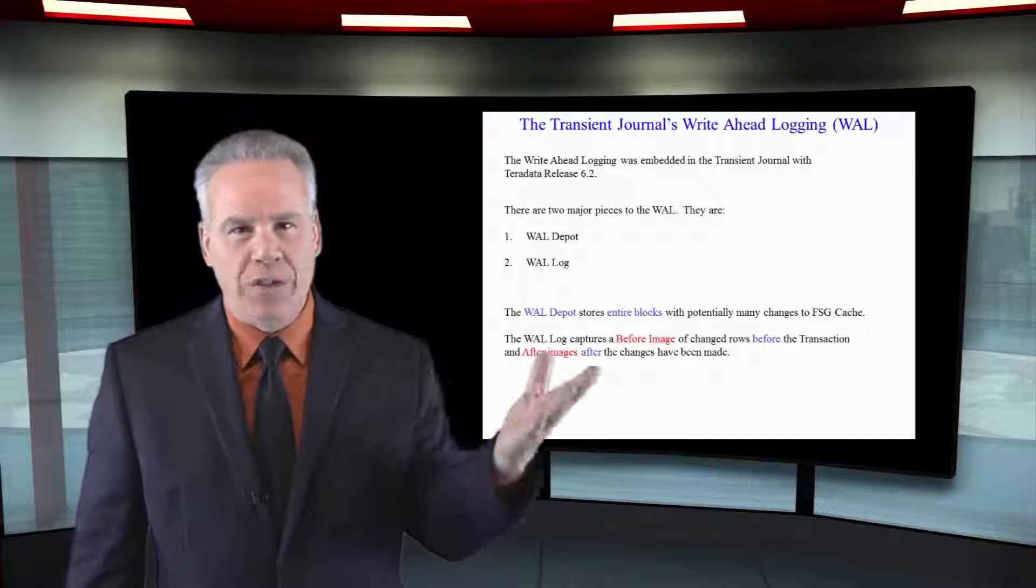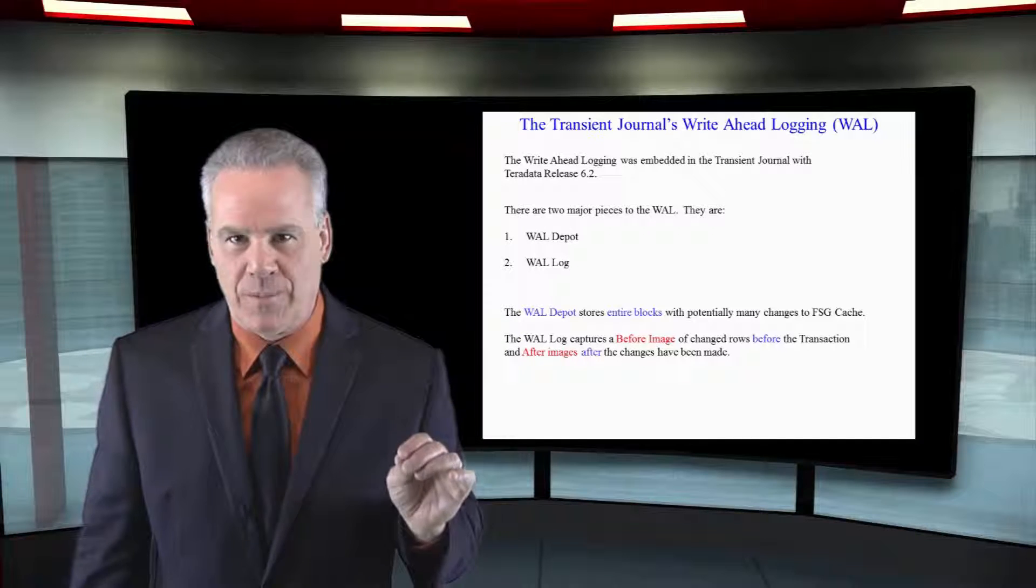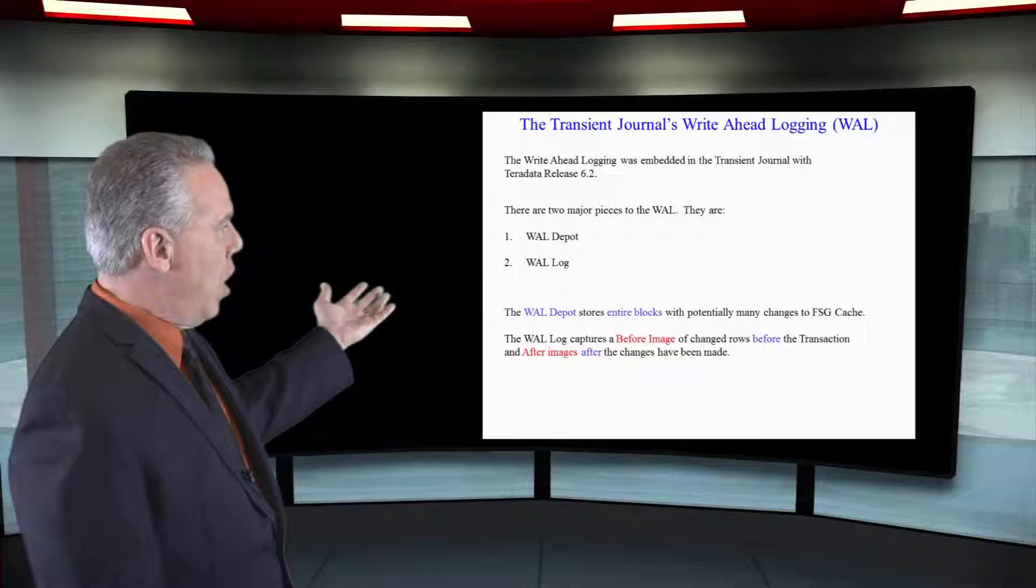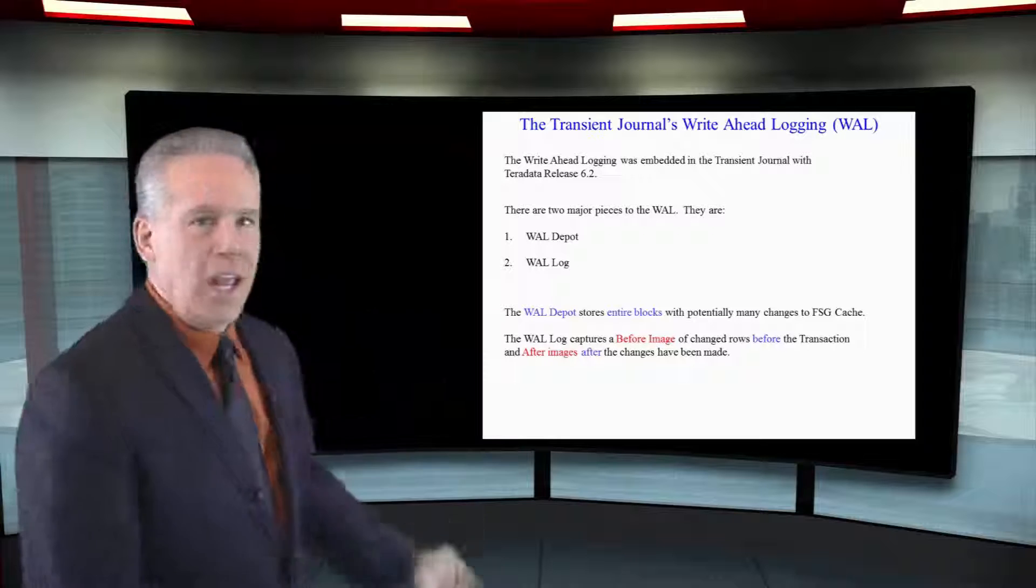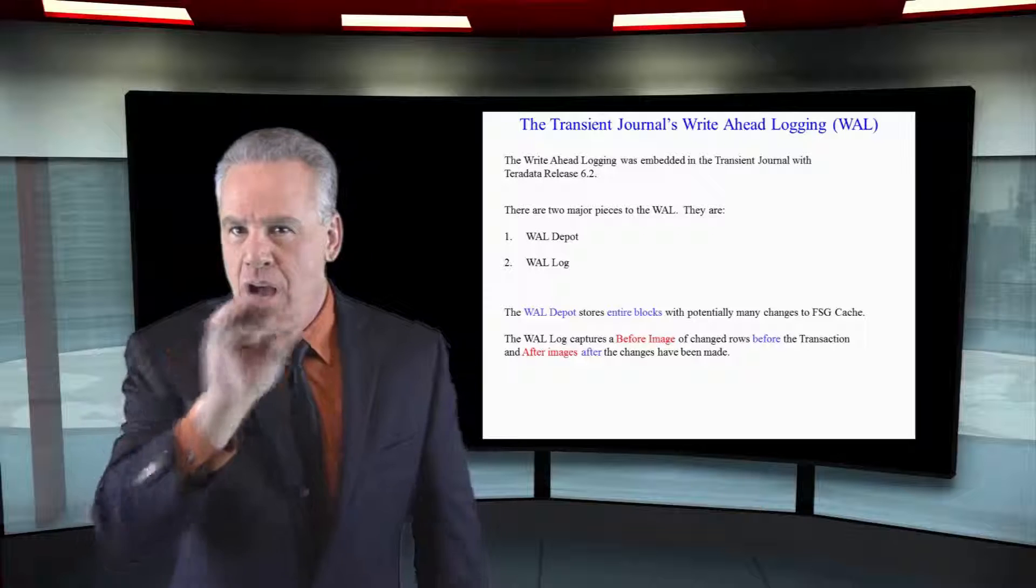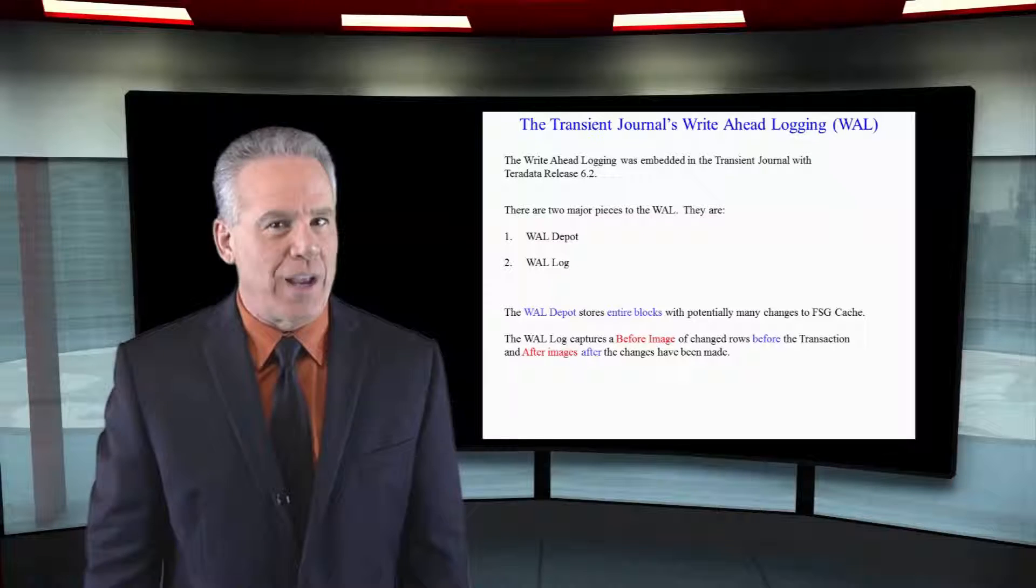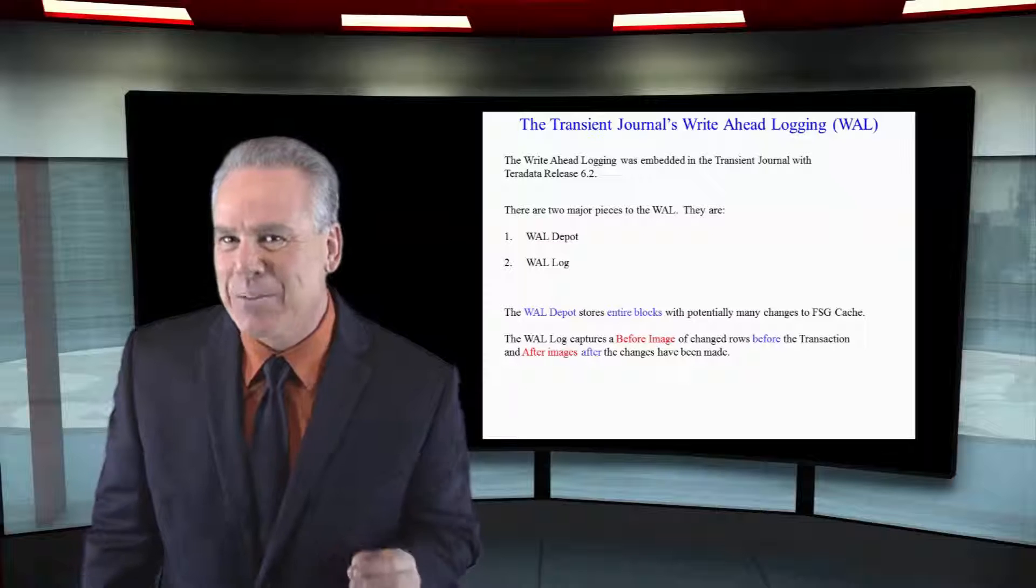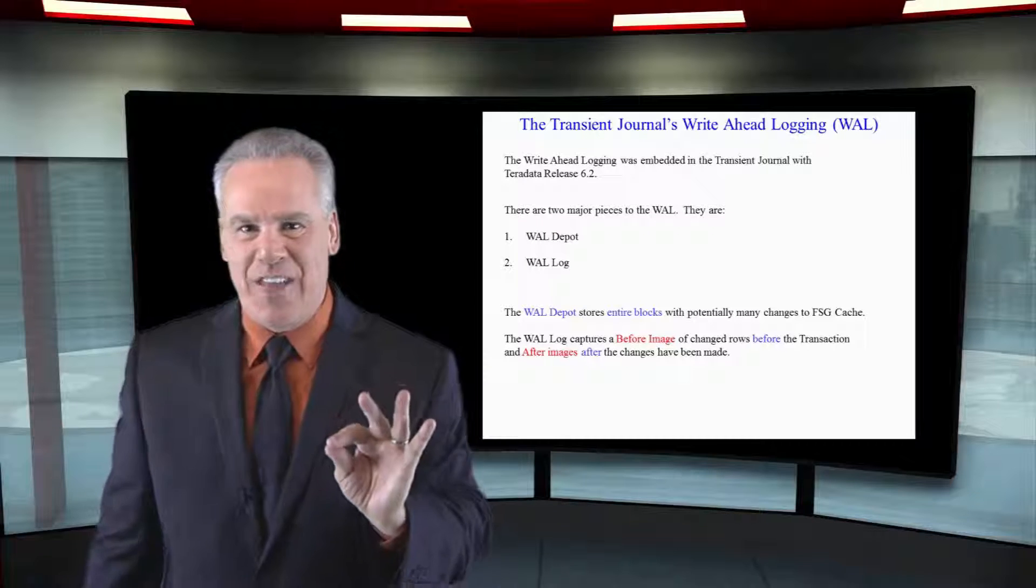Now, the WAL Log and WAL Depot are very similar. The WAL Log is going to actually take a before picture of any row that changes just like before, but then when the row changes, it captures an after image of that.